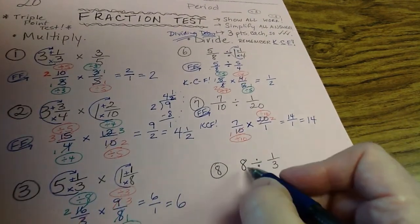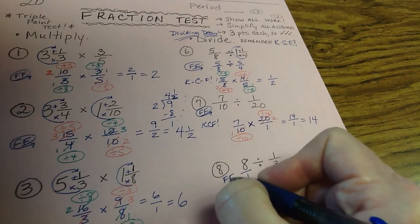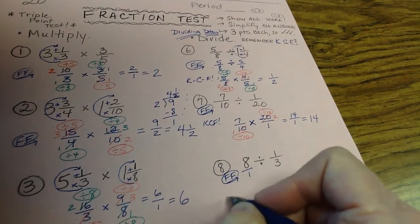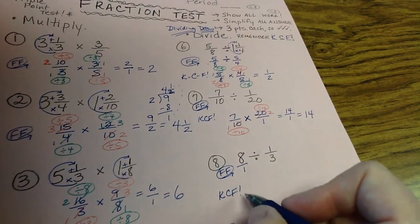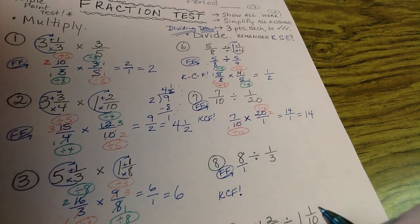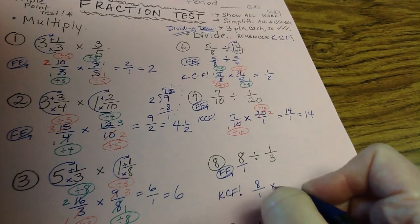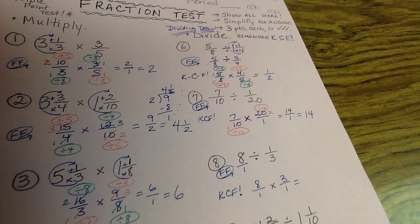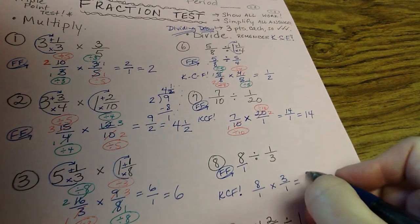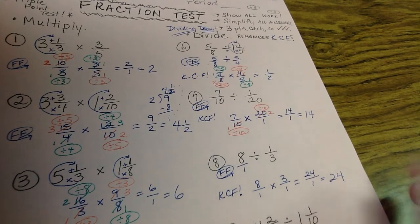Number 8 — easy peasy to make it into a fraction, just put it over 1. Now we did fractions first. So it's time for our dividing detour: keep, change, flip. You only use keep, change, flip for dividing — it's the alliteration of dividing detour. So it's 8 over 1 times 3 over 1. There's nothing to factor there. 8 times 3 is 24, over 1 equals 24. Done.